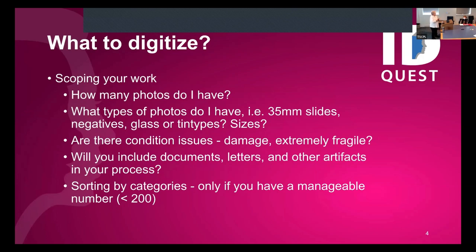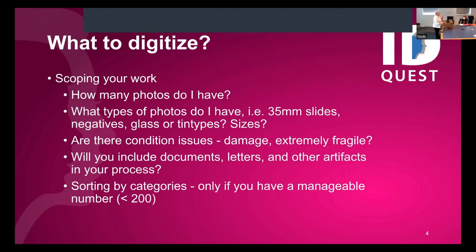You could also include documents, letters, and certificates in this process. Then the question comes up about sorting. Do I want to sort everything by family group, by name, by decade, by location? I'm going to tell you: only sort or pre-sort if you don't have very many. If you're like I am with 12 tote boxes, there is no way — we would have spent years sorting and never got started digitizing. So we just started. If it's already sorted or it makes sense, you can do it, but don't waste a lot of time there.